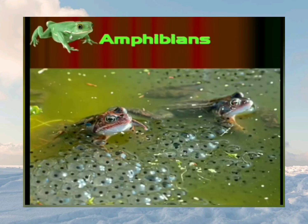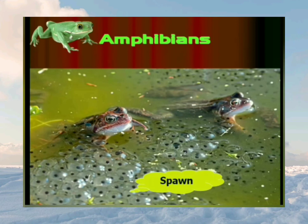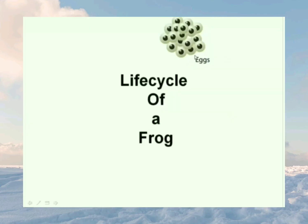Now let's see reproduction in amphibians. Amphibians are animals that live on land as well as in water. A frog is an amphibian. A frog also produces a spawn of eggs — spawn is the mass of eggs — and it lays eggs in a safe place in water. The eggs of frogs are covered with jelly. The development of a frog has many stages, which is called the life cycle of a frog. The eggs hatch into tadpoles, which look like little fishes.